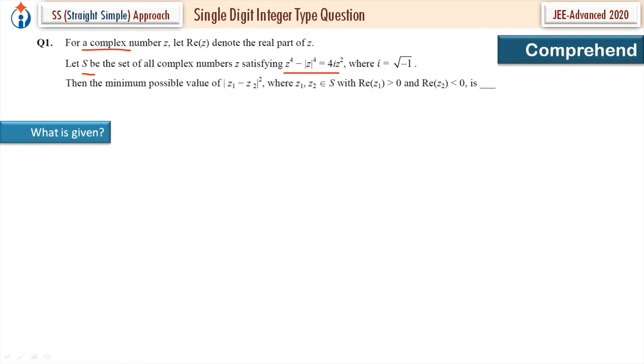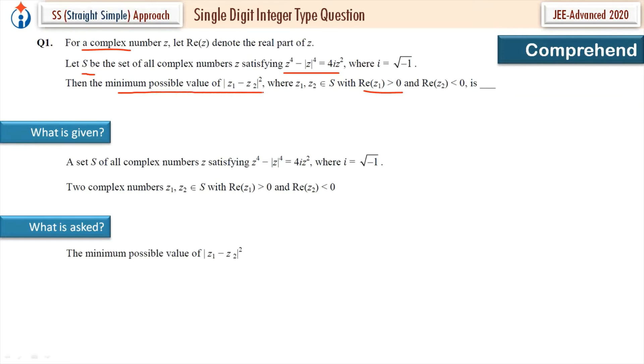Iota is equal to under root of minus 1. Then the minimum possible value of this, so this is asked, and Z1, Z2 belongs to set S. Real part of Z1 is greater than 0 and real part of Z2 is less than 0. This is given. What is asked: the minimum possible value of modulus of Z1 minus Z2 square?